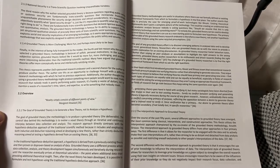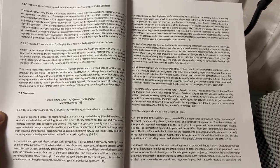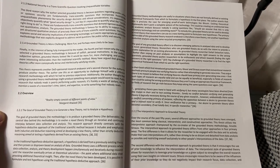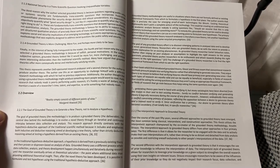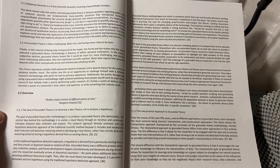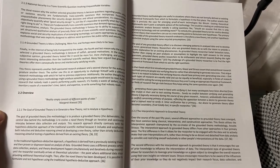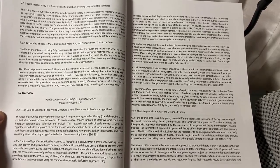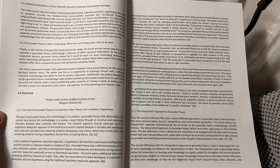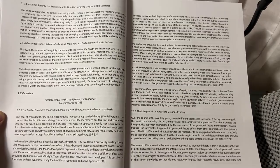References 36 and 33. In the traditional hypothesis-deductive approach, a hypothesis is derived from a previously existing theory and then proven or disproven based on analysis of data. Grounded theory uses a different process where data collection, analysis, and theory development happen simultaneously and iteratively during research until the researcher eventually arrives at theoretical saturation, the point where additional data stops providing additional theoretical insight. Then, after the novel theory has been developed, it is possible to formulate and test hypotheses using the traditional hypothesis-deductive approach.